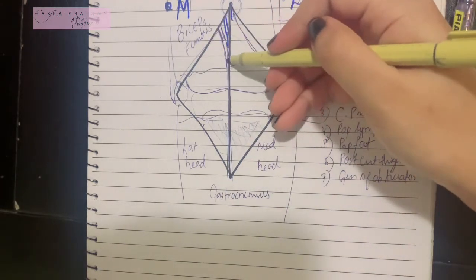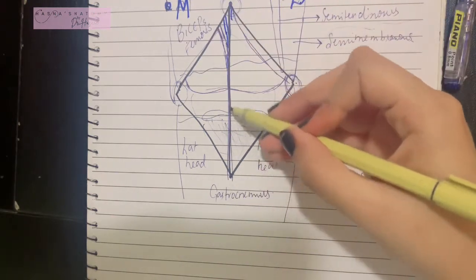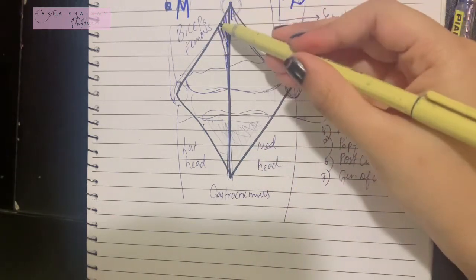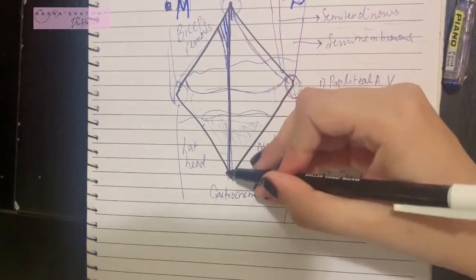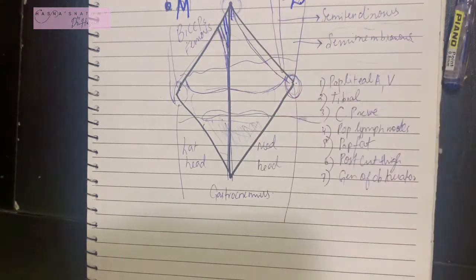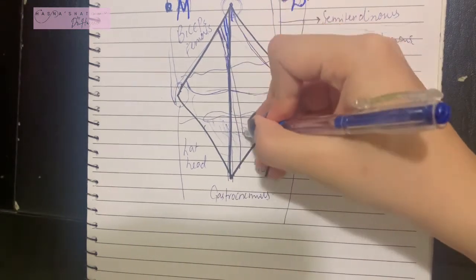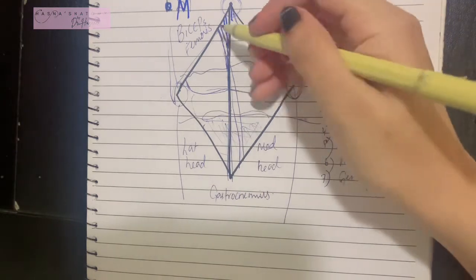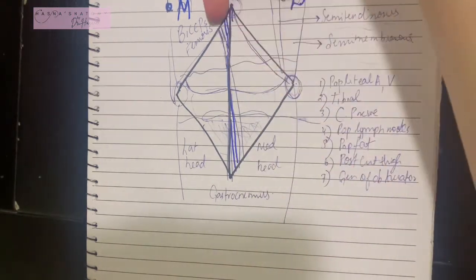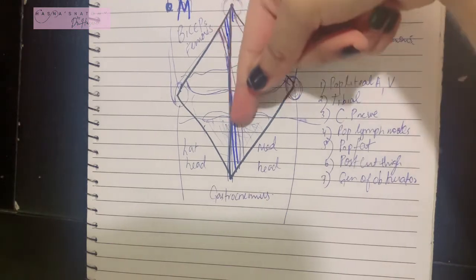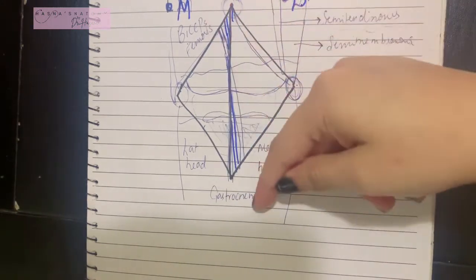In the middle part of the fossa, all three structures come into one line. In the lower part of the fossa, the entire scenario is reversed — the most medial structure is now the tibial nerve, the vein stays in the middle, and the most lateral structure is the popliteal artery. Essentially, the artery and vein cross the tibial nerve throughout the fossa, from the nerve's medial to its lateral side.